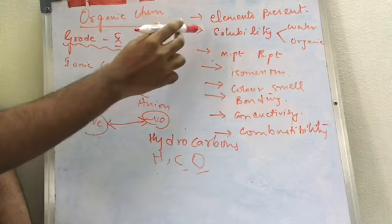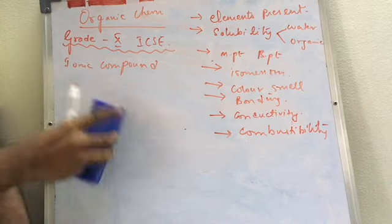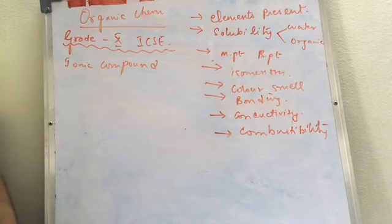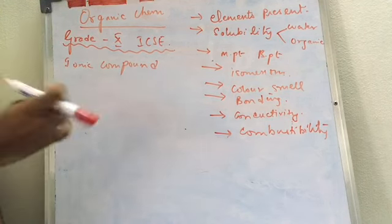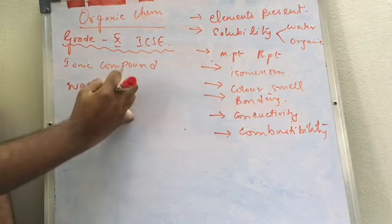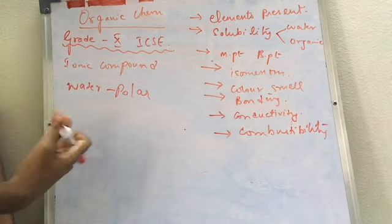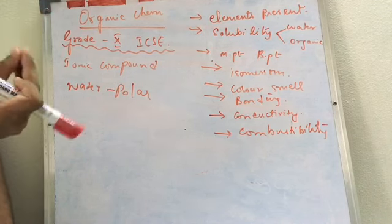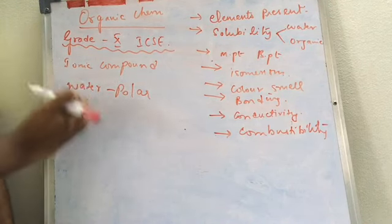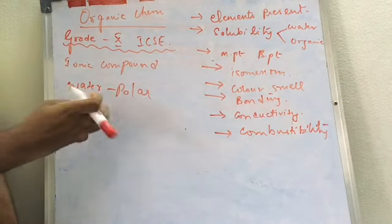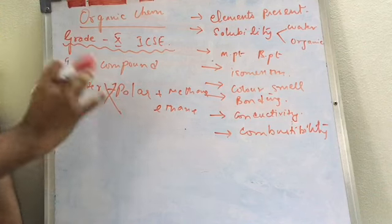The next point is solubility. There is a statement: 'like dissolves like.' This means the bonding in the solute and the solvent must always be the same. Water is a polar compound, which has a mild ionic bond. But compounds like methane, ethane, or propane are organic compounds with covalent bonds. Because of this, water and methane or any other hydrocarbon are not soluble — the bonding is different. So organic compounds cannot be soluble in water.